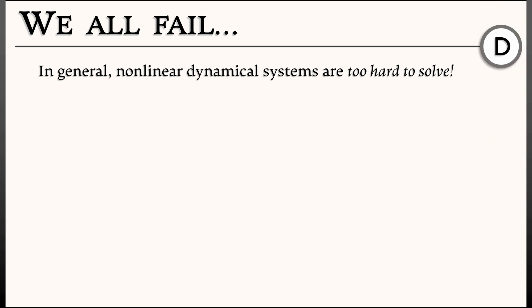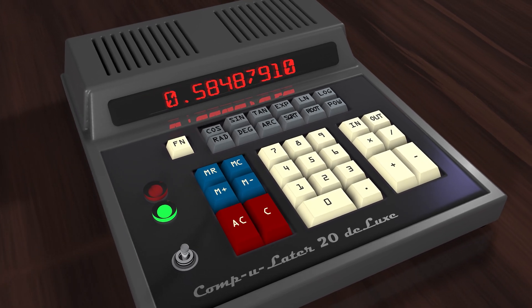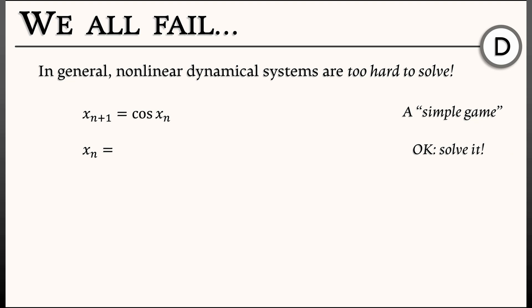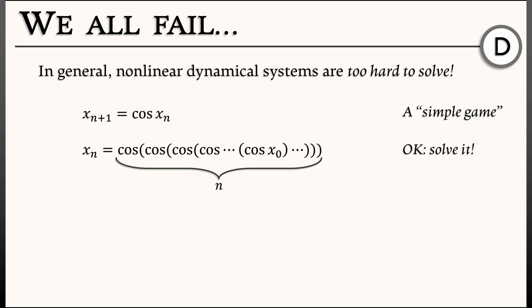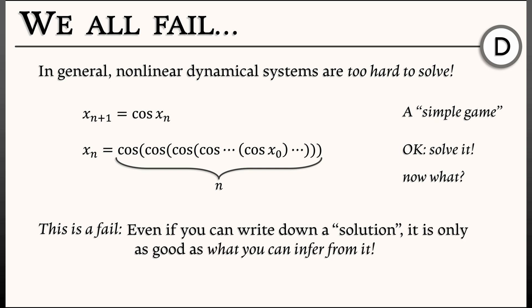This problem isn't unique to continuous time — discrete time dynamical systems can also be really difficult to handle. Consider the recurrence relation x_{n+1} equals cosine of x_n. You pick your initial condition x_0 and keep applying the cosine. The explicit solution is x_n equals cosine of cosine of cosine... of cosine of x_0, repeated n times. But this is a fail — what are you going to do with it for various values of x_0? Having an explicit solution is only as helpful as what you can infer from it, and in most cases, the answer is not much.